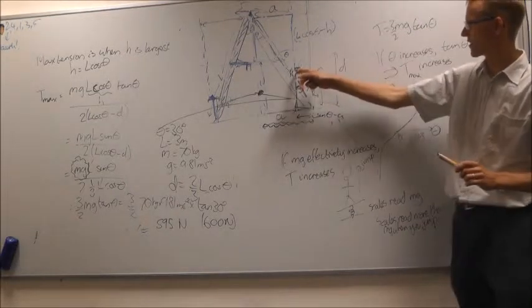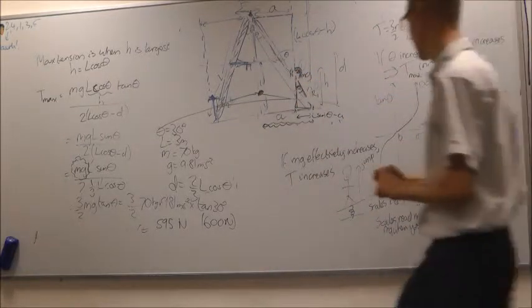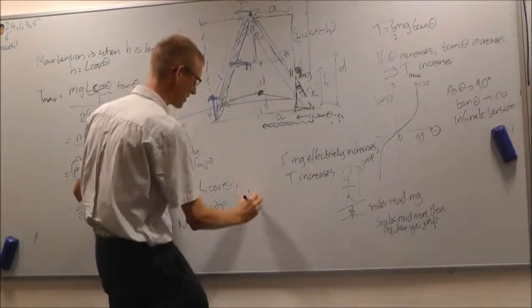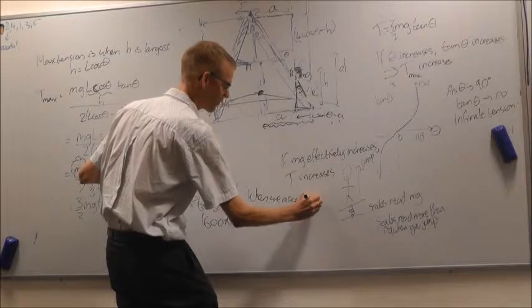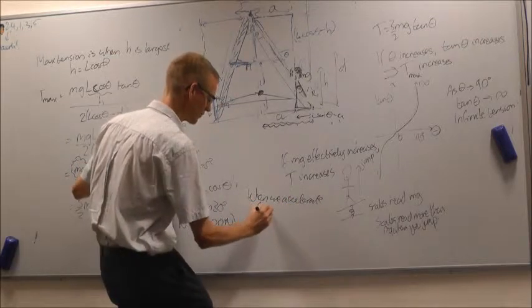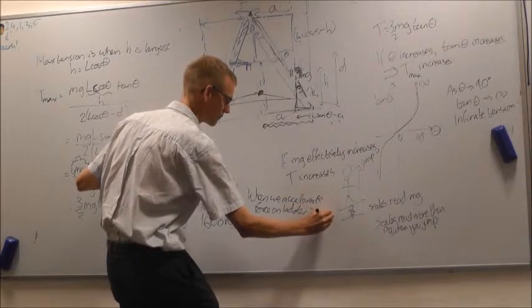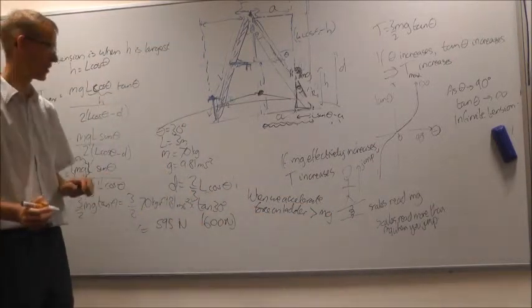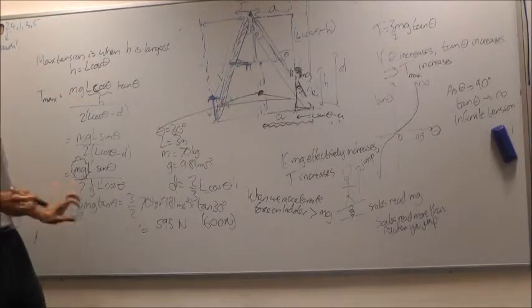So effectively the mass that's being put on the ladder is greater than Mg when you accelerate. So when we accelerate, the force on the ladder is going to be bigger than Mg, therefore your tension then is going to be bigger.